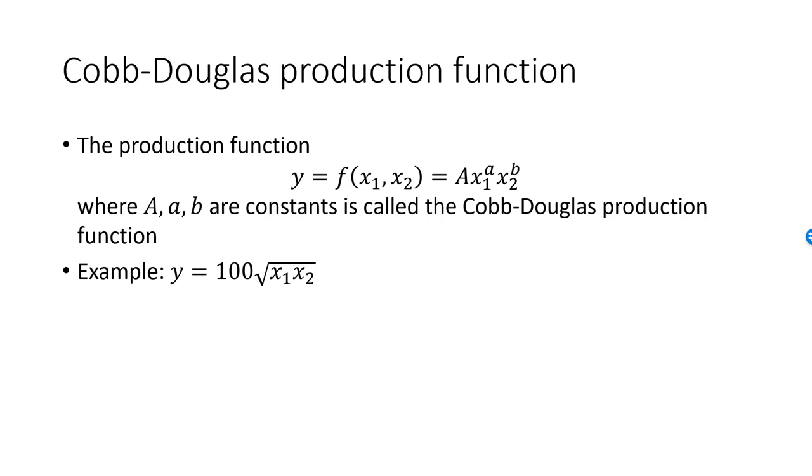With a Cobb-Douglas production function, the production factors will be in between perfect substitutes and perfect complements. The isoquants will be in between straight lines and L-shaped curves.